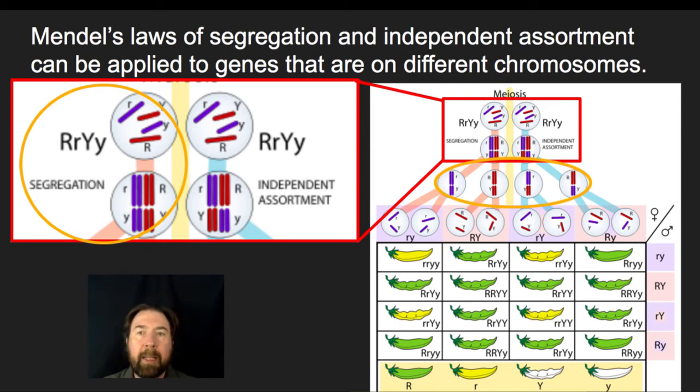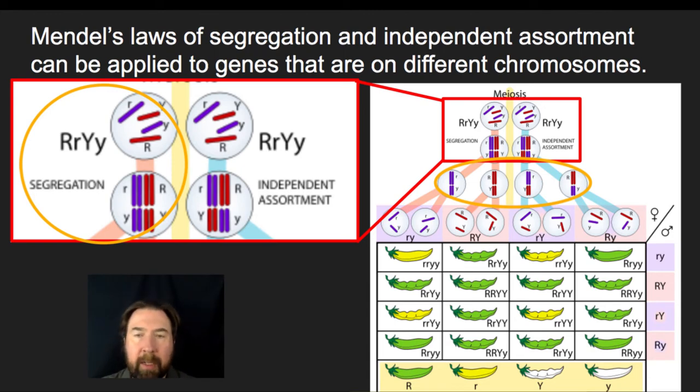The same is true of the Y alleles — all cells will either get a big Y or a little Y. Those cells segregate through the process of meiosis and the formation of gametes.